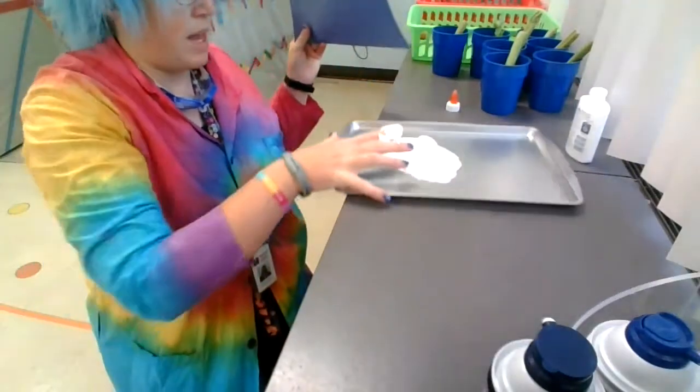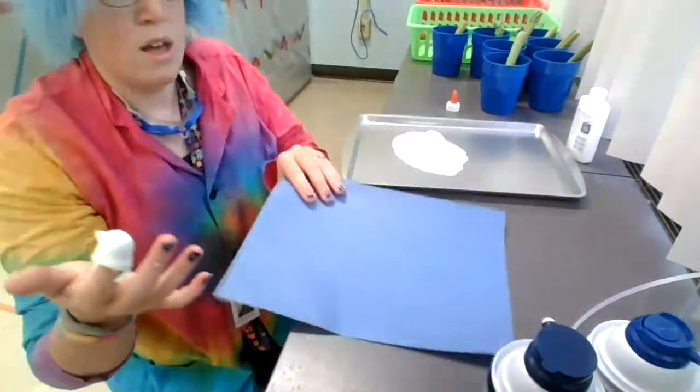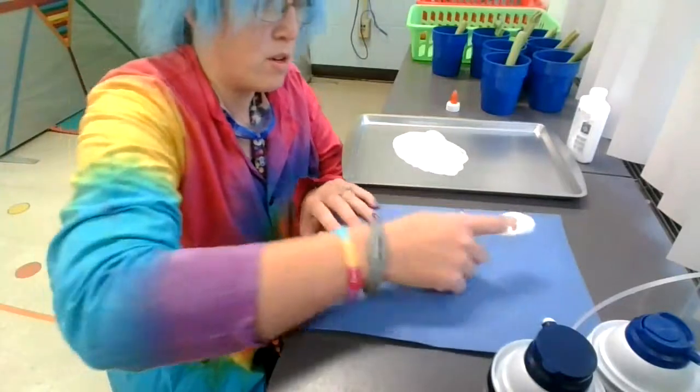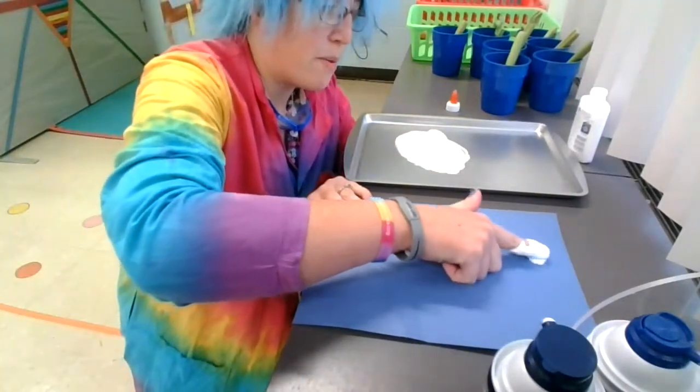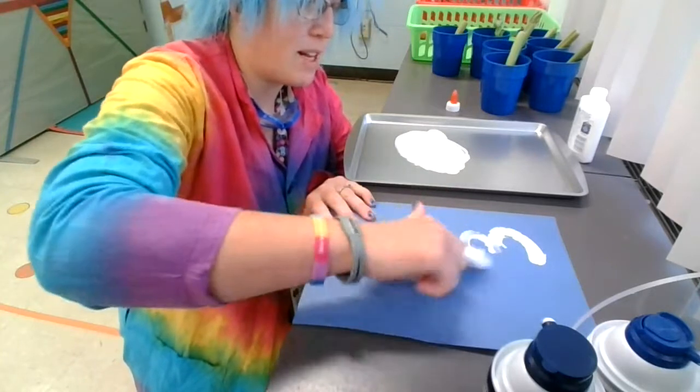Okay, so there is our paint. We're going to use our finger. And I have paper, blue paper. Since this is white, I decided to use blue paper. And I'm going to make some puffy clouds.